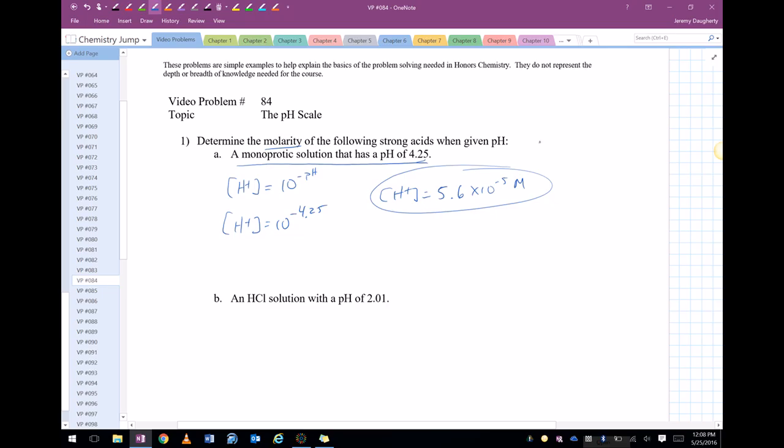So in this case, they're all strong acids, so here's the generic strong acid. So if this is X, this is X. Which means that also the concentration of the acid is 5.6 times 10 to the negative 5th molar.